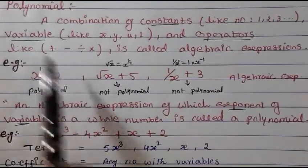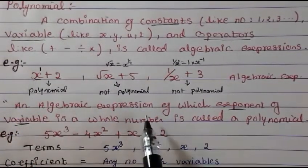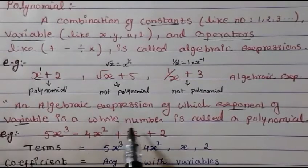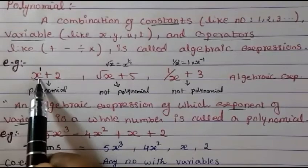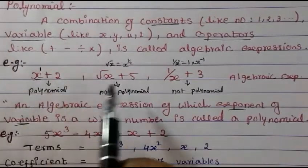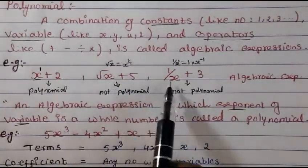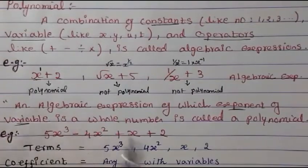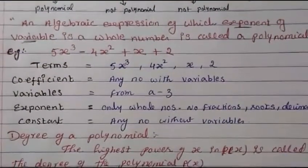I hope you now understand what a polynomial is. A polynomial means an algebraic expression which has the exponent of the variable as a whole number. Now, after understanding what a polynomial is, let's take one expression and learn all the parts of the polynomial.